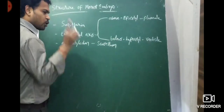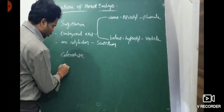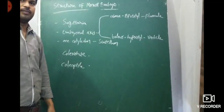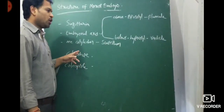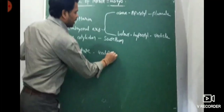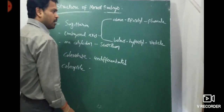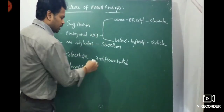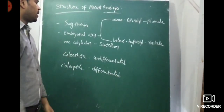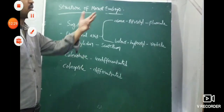Important structures in monocot embryo: coleorhiza and coleoptile. Coleorhiza is an undifferentiated sheath that covers the radicle. Coleoptile is a differentiated sheath that covers the plumule. The difference: coleorhiza covers radicle (undifferentiated), coleoptile covers plumule (differentiated).